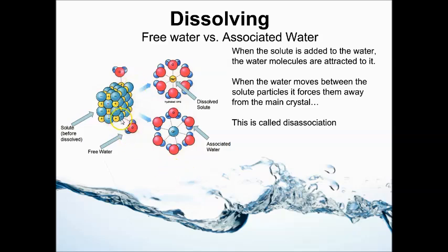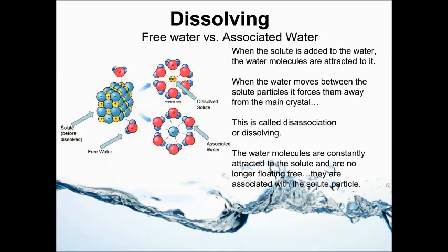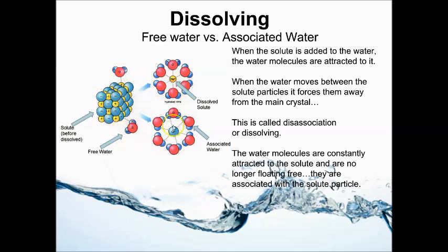Think of it like a bad breakup — if you're attracted to someone else, you disassociate from the original person and become associated with a new friend group. Dissociation and dissolving are really the same thing. Water molecules are constantly attracted to the solute — they're always associated with water molecules because of those positive and negative charges. A chlorine ion has to be attracted to something positive: either the hydrogen ends of the water molecules, or the positive ions in the salt.